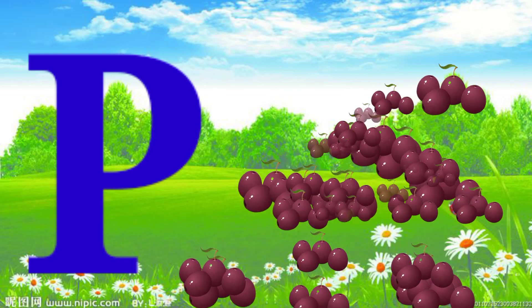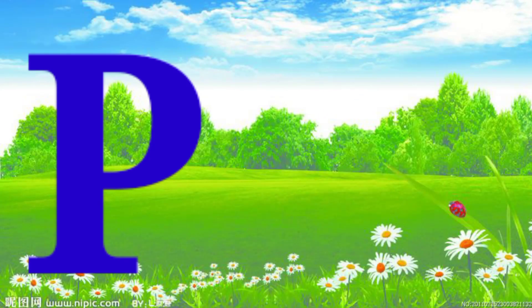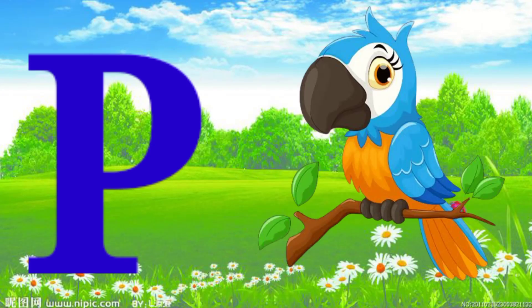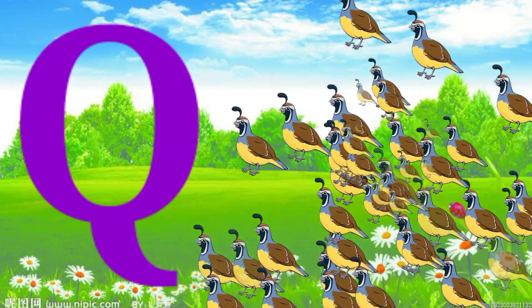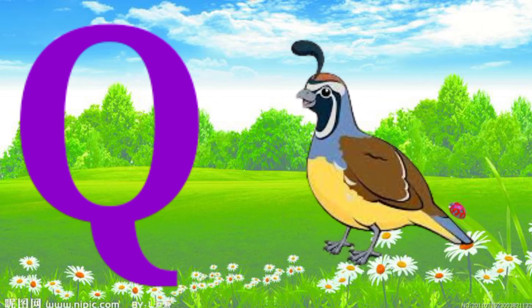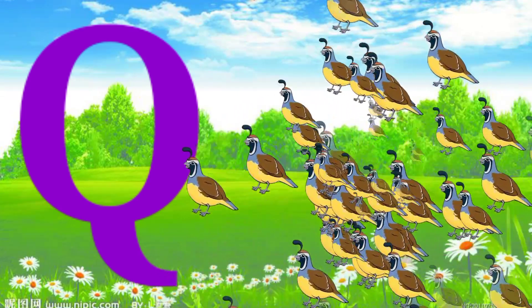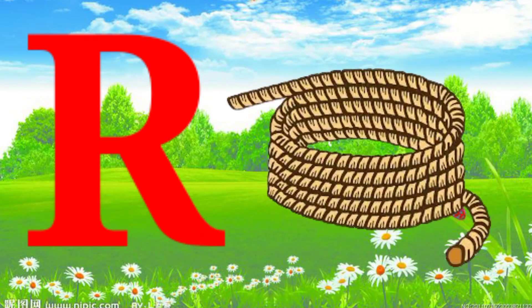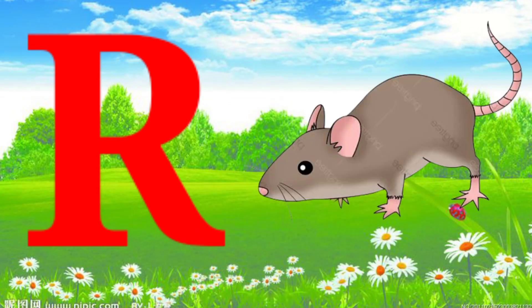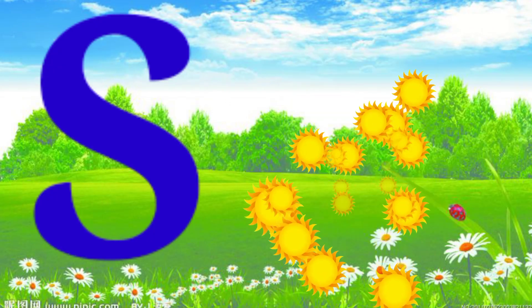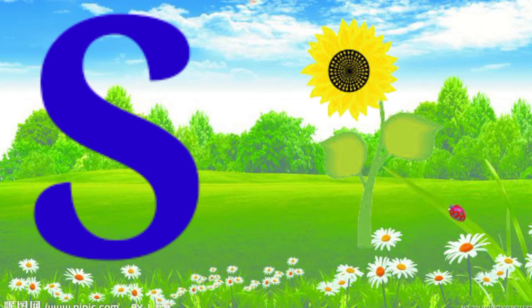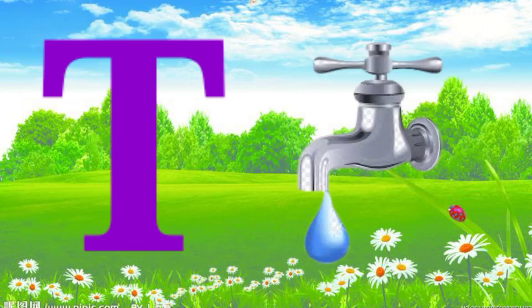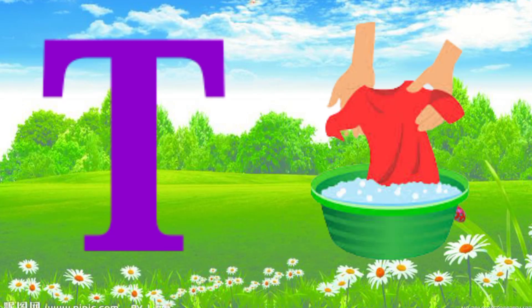P for plum, P for parrot. Q for queen and Q for quail. R for rope, R for rat. S for sun and S for sunflowers. T for tap, T for tub.